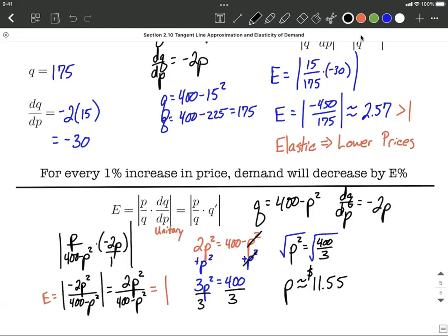Remember, maximizing our revenue is going to occur whenever elasticity of demand is unitary or equal to 1. I hope this helps out as you're working on elasticity of demand. I know there's a lot to kind of gauge and get comfortable with. Good luck.